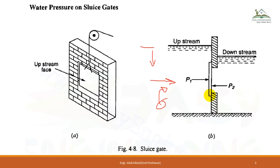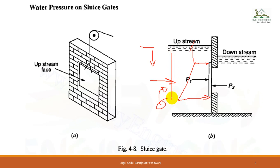What will be the pressure distribution on this sluice gate? At the top end, the pressure will be due to the water at that depth: W1 × H1, where W is 9.81 kN/m³. The pressure distribution will be trapezoidal, and at the bottom position the maximum pressure will be due to the full height W2. The area of this trapezoid equals the total pressure P1, and the location of the resultant will be at the centroid of this trapezoid.